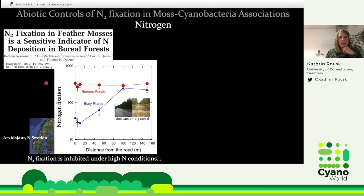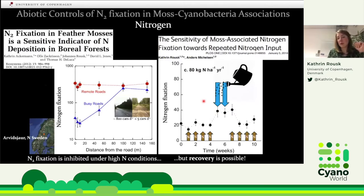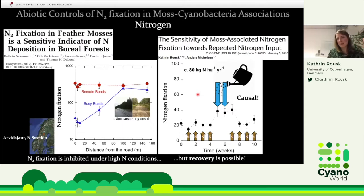We were also interested in whether this inhibition could be reversed — whether the process could recover from nitrogen stress. We collected mosses, added a lot of nitrogen in the lab, then simply rinsed the mosses with water to remove the nitrogen. Activity actually increased upon removal of the stressor. Recovery is possible, it's quite fast, and it's a very dynamic system: add nitrogen, activity is inhibited; remove it, activity increases. This also nicely shows that the effects of nitrogen are really direct and causal — not some confounding effect from the roads.